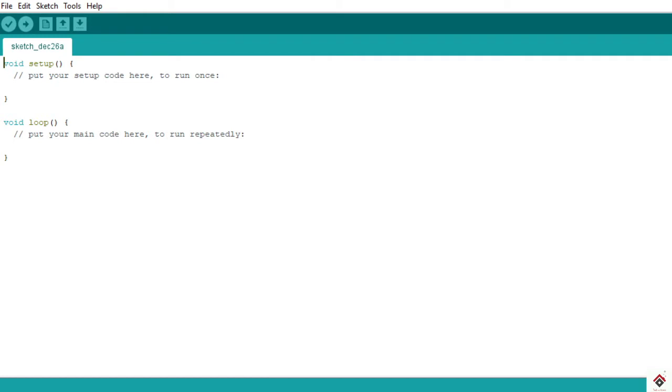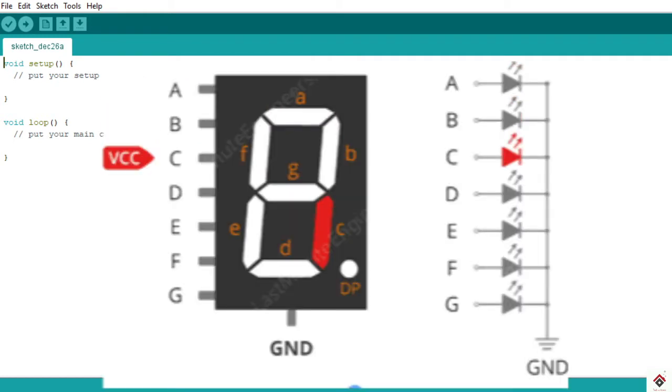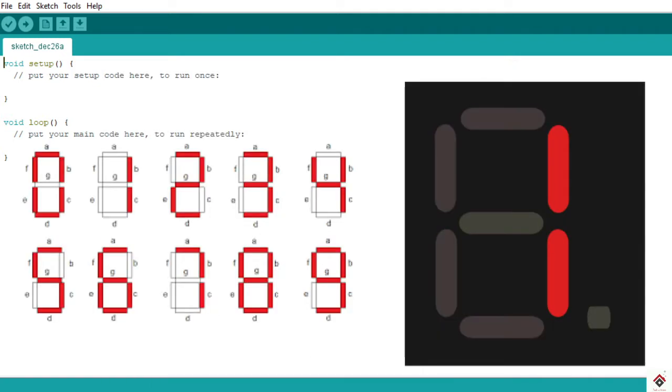Hi guys, welcome back to the 29th part of the Arduino tutorials. In my previous video, I explained the basics, the working principle, and also shown how you can use your seven-segment display to make an increment and decrement counter.